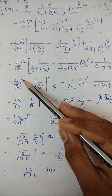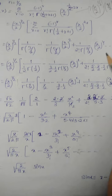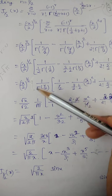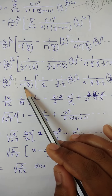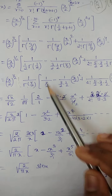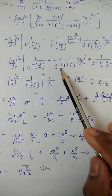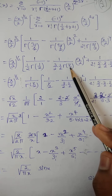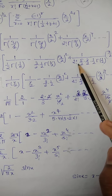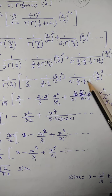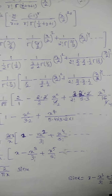Now (x/2)^(1/2) is as it is. In the denominator, we can see Γ(1/2) is common everywhere, so we take Γ(1/2) outside the bracket. The remaining terms are: 1/(1/2) minus 1/((3/2)·(1/2)) · (x/2)^2 plus 1/(2! · (5/2)·(3/2)·(1/2)) · (x/2)^4, and so on.